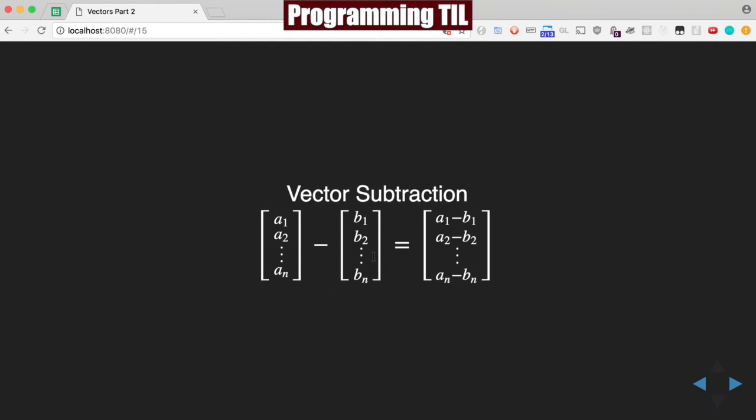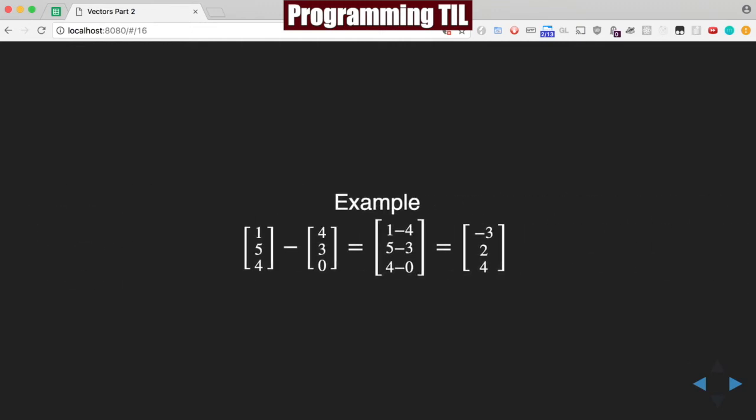Same thing with subtraction. You can actually think of subtraction as adding the negated value of the second vector. So this could be plus negative 1 times this. Here's a small example in 3D showing each of the elements and their resulting vector.